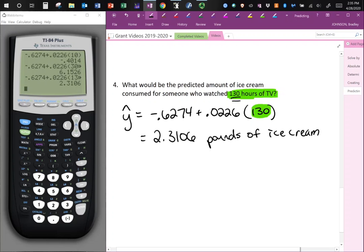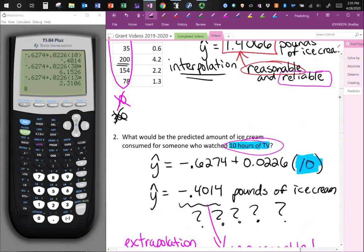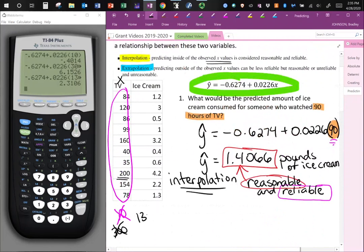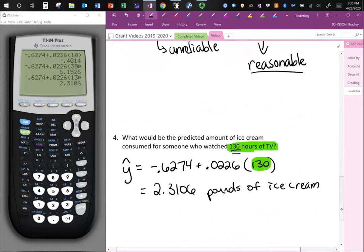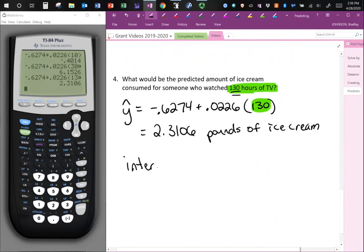Now, let's think about 130. Is 130 within that range on the table? So going back, think of 130. 130 does fall within. So we know that we have used interpolation. So this is interpolation.